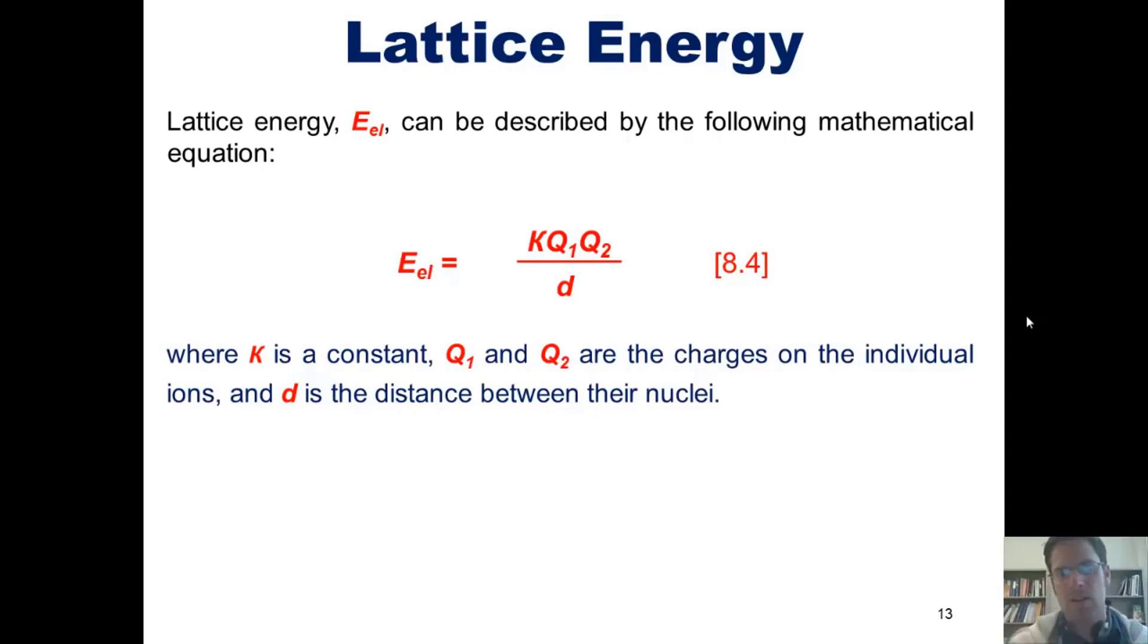Now, if you analyze this formula mathematically, you'll see a couple of things. First of all, if I increase Q1 and Q2, it's going to increase the lattice energy. If I increase the bond distance, it will decrease the lattice energy. If I decrease the bond distance, it will increase the lattice energy.